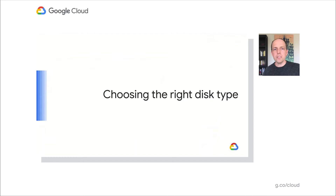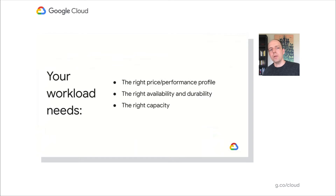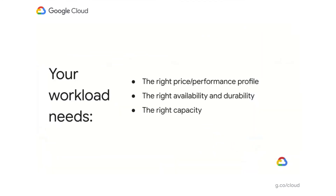With the new disk types and improved performance for existing disk types, you can pick the right price performance profile for your workload. For many workloads, three criteria help to quickly identify a good starting point for the right disk type. Firstly, what does the price performance profile look like? What are your workload's IO and throughput requirements? How sensitive is the workload to storage scale and cost? Second, what are the availability and durability requirements?